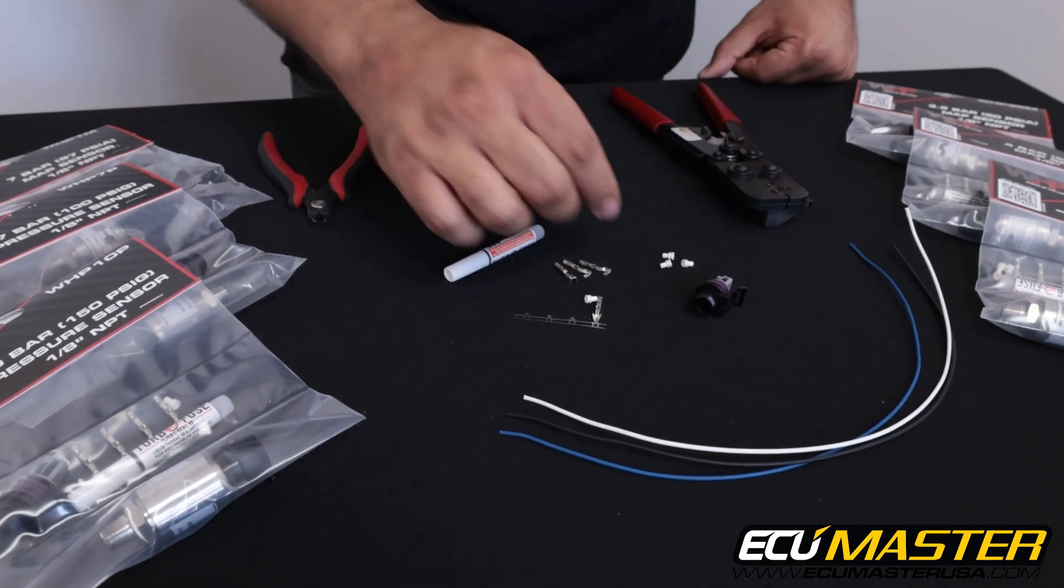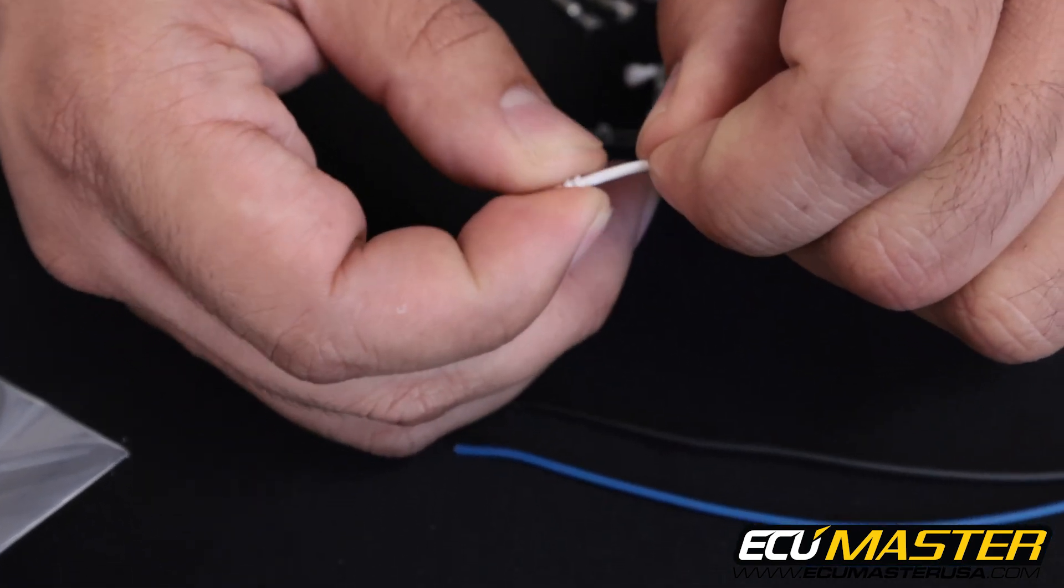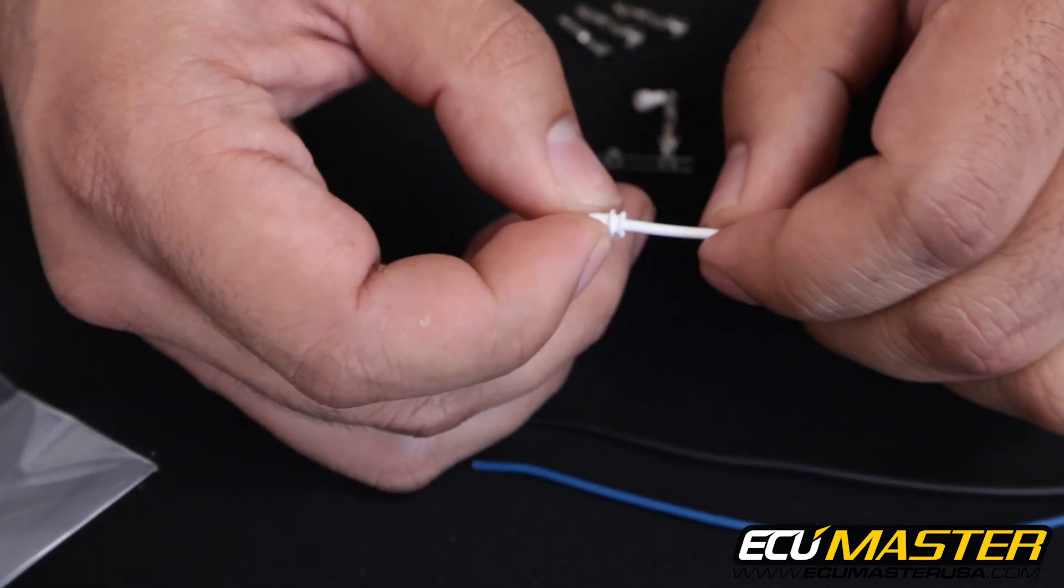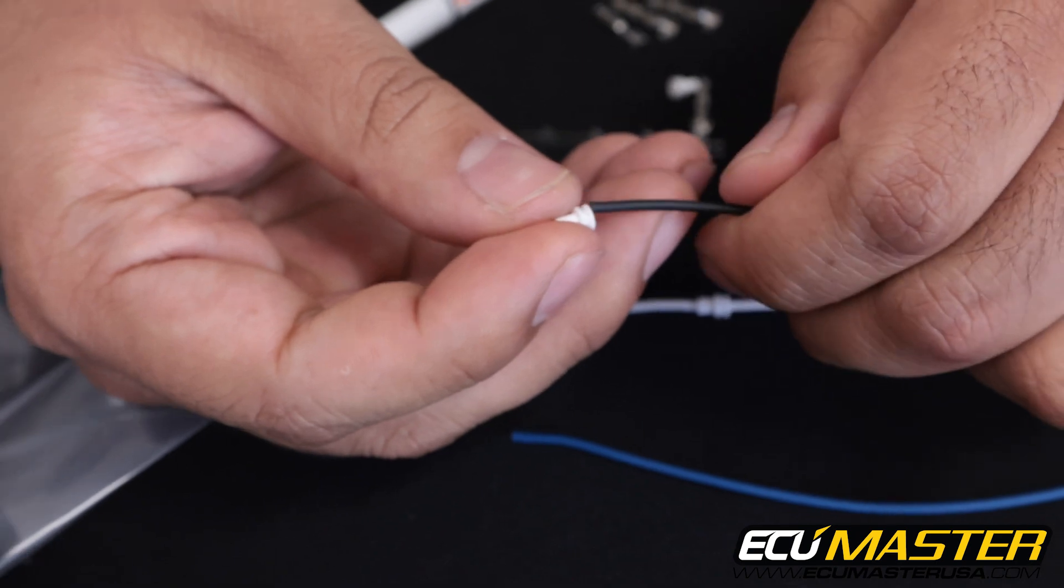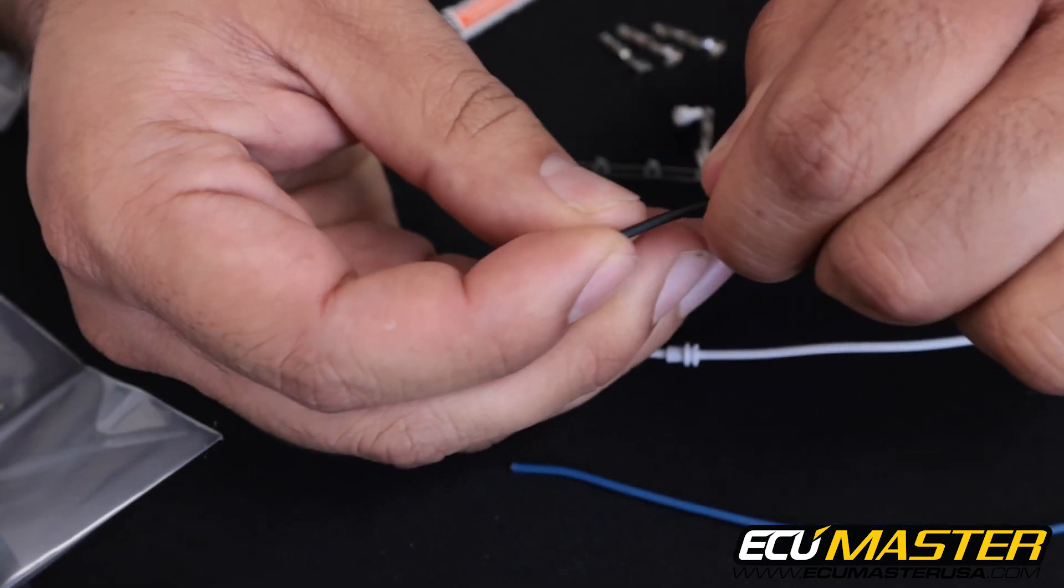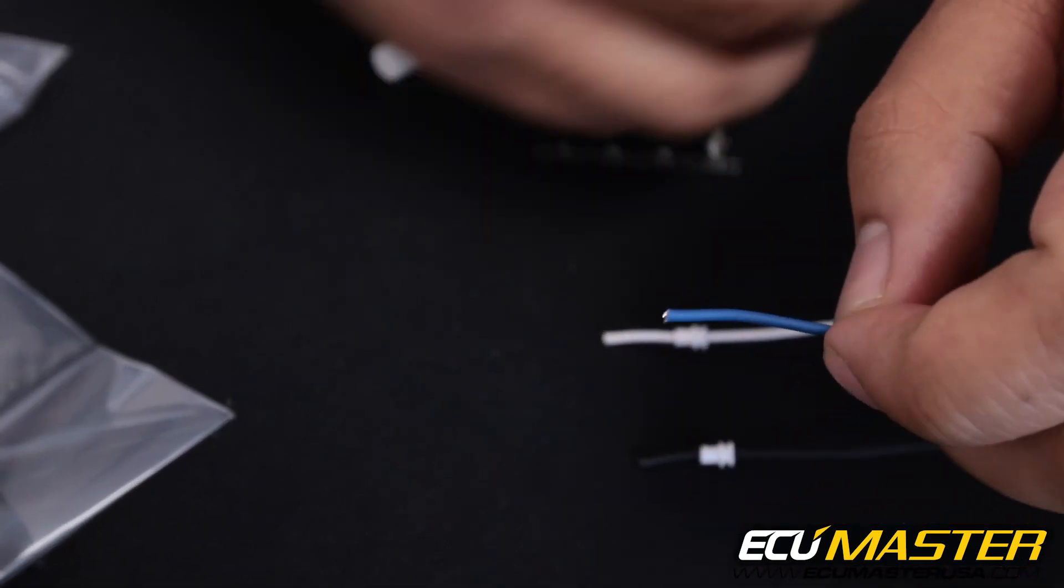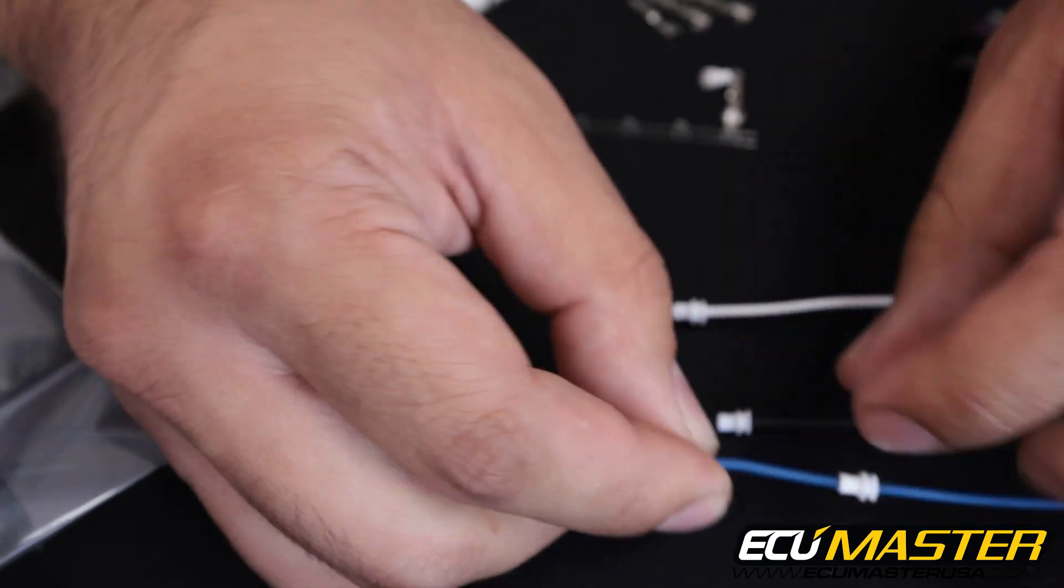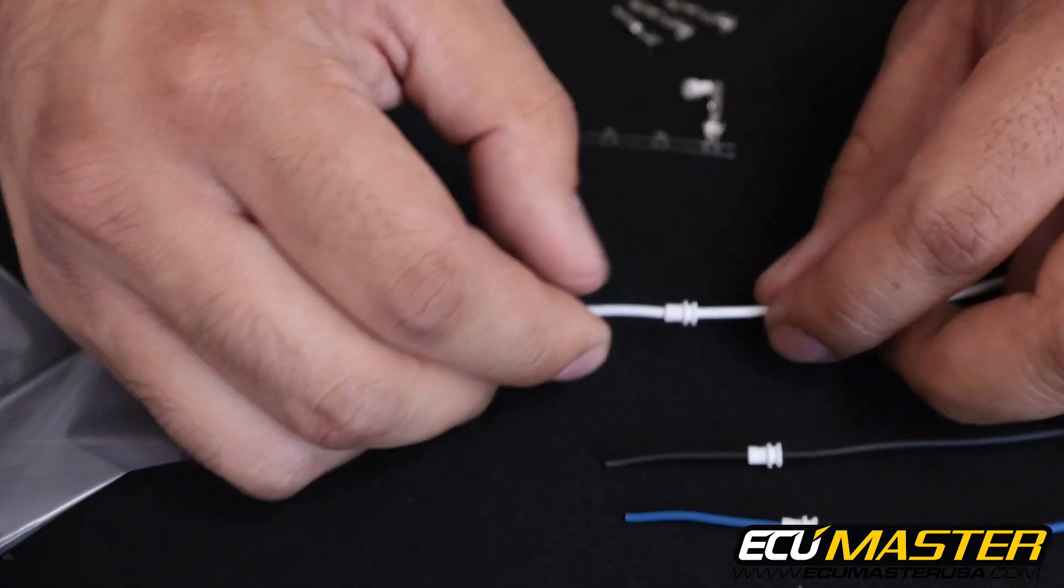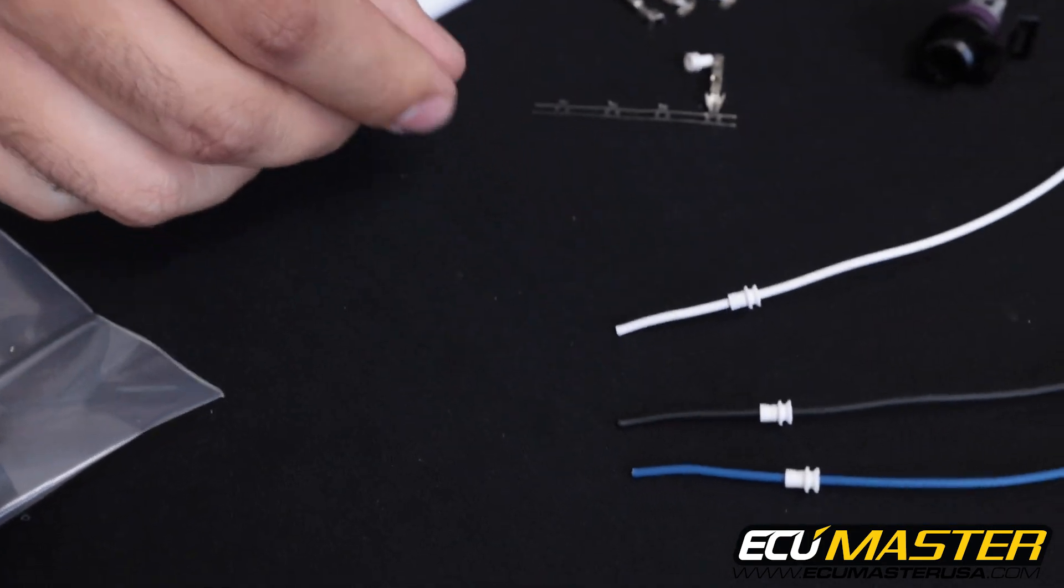So before we strip these wires we're going to take the weather seals and put the wires through so that we don't have copper strands stabbing us in the fingers as we work later. This prevents fraying at the end of the copper, and also make sure that you do it before you terminate the wire into the terminal itself. It is a real pain in the neck to have to redo stuff after you've already crimped the terminal onto the wire.